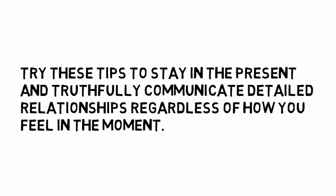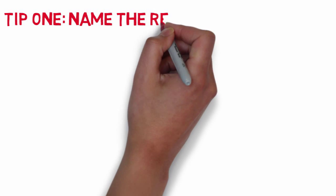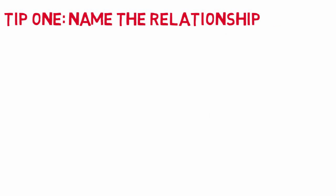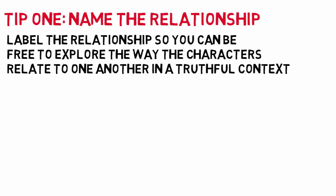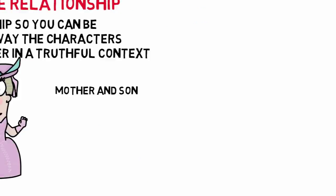Try these tips to stay in the present and truthfully communicate detailed relationships, regardless of how you feel in the moment. Tip number one: name the relationship. To avoid the trap of pre-planning feelings, label the relationship so you can be free to explore the way the characters relate to one another in a truthful context. If you're playing Hamlet and Gertrude, the given relationship is mother and son.